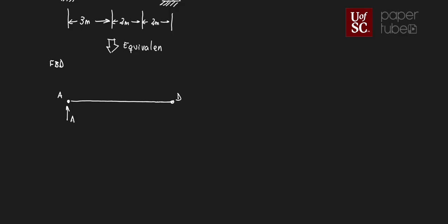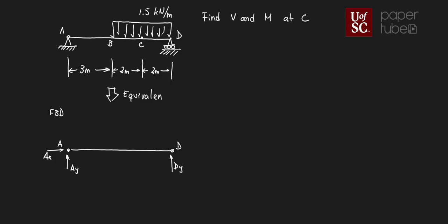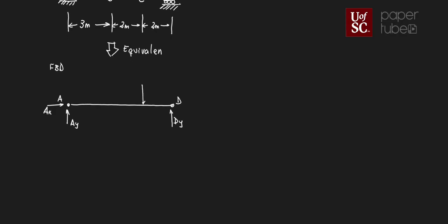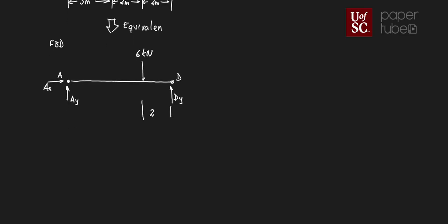At A we have reactions AY and AX. At D we have DY — it's a roller, so it does not have any reaction force in the X direction. That 1.5 kN/m distributed force is replaced by a point load going through the centroid, which is right at the middle of that rectangle. The magnitude is 1.5 kN/m times 4 meters, giving us 6 kilonewtons, located 2 meters from one end, making the distance from D 5 meters. That's my equivalent free body diagram.